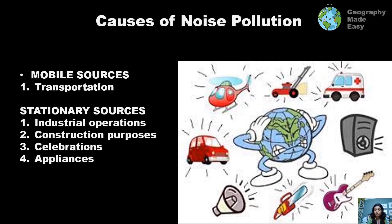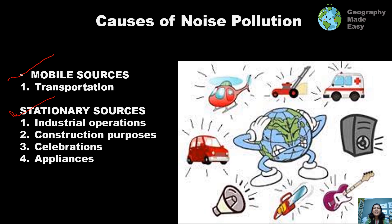What are the causes of noise pollution? There are two types of sources: mobile sources — something which is not stationary or fixed — and stationary sources. Stationary sources include industrial operations, factories located in a particular area, construction, and celebrations. Celebrations can be stationary or mobile; for example, a marriage procession is a mobile source of noise pollution. Voting celebrations should also be taken into account. Household appliances also create a lot of noise and may or may not be stationary.